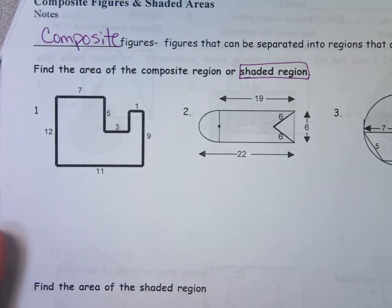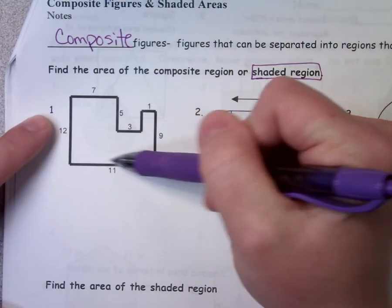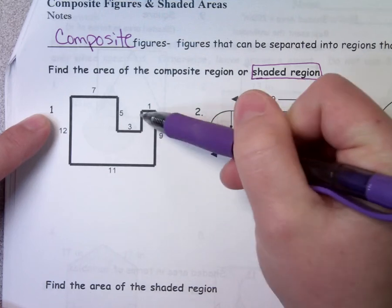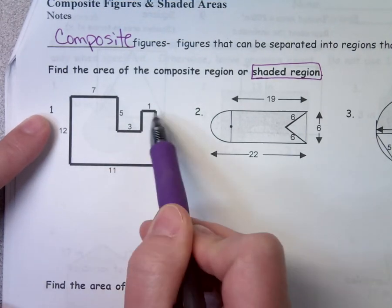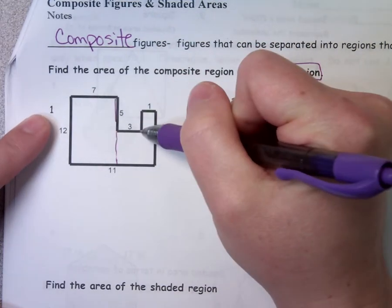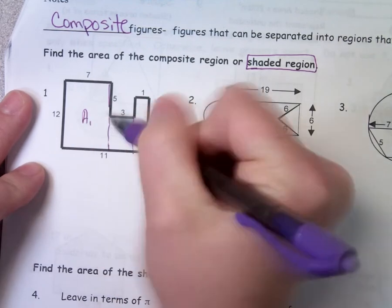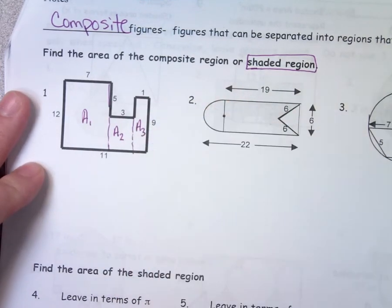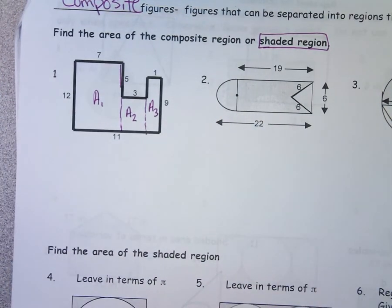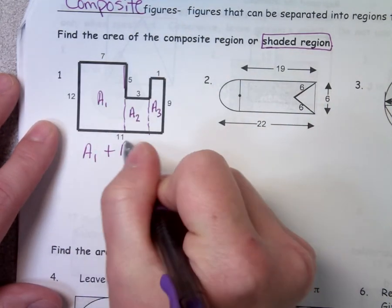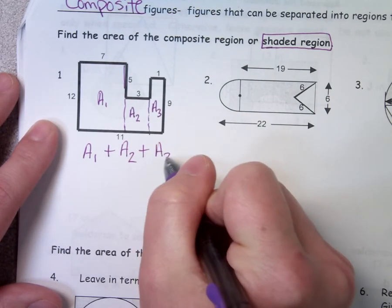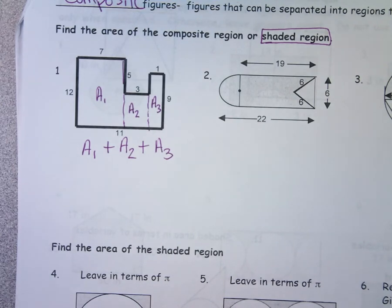Looking at number one, I could do this a couple of different ways, but I'm thinking I could split it into this rectangle right here, this rectangle right here, and this rectangle right here. You have a lot of choices. I'm going to call this figure one, figure two, and figure three. Once I know the areas of each of those, I'd add them up. So my goal is to find the area of figure one, add it to figure two, and add it to figure three. I'm going to write down my game plan and then go from there.